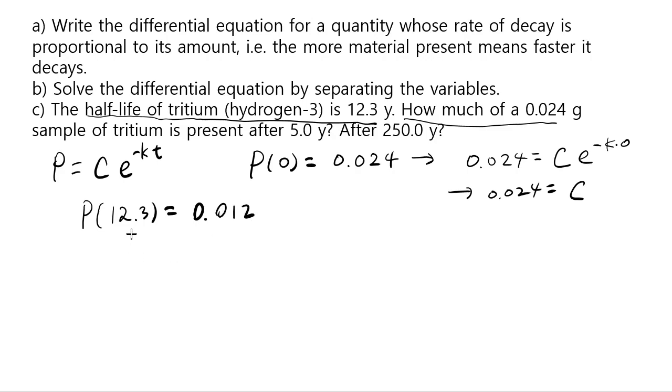And again, we can use this formula, what's p of 12.3? According to this formula, it has to be c is 0.024, e to the negative k times, this is the value of t. So I'm going to replace t by 12.3. That has to equal to 0.012. Dividing both sides by 0.024, we get e to the negative k, 12.3 equals to 1 over 2 or 0.5.